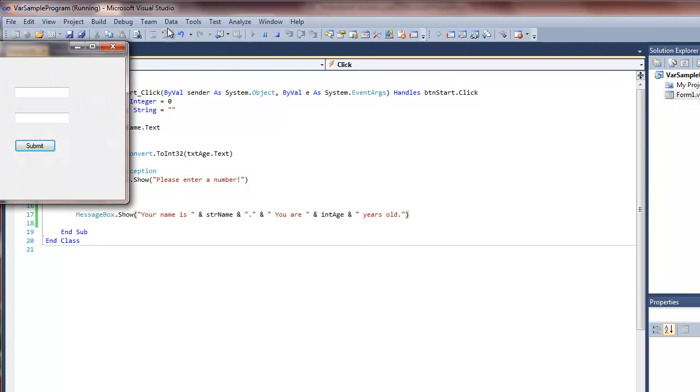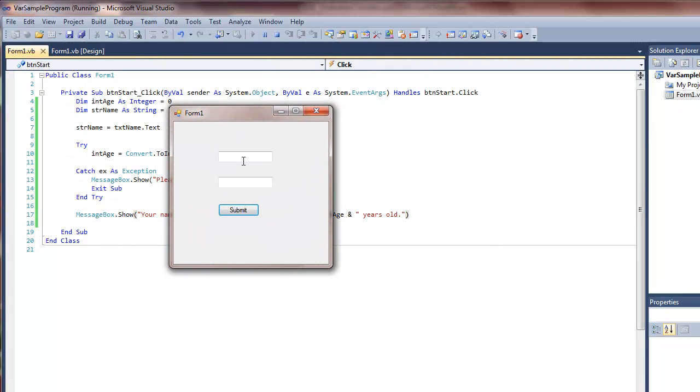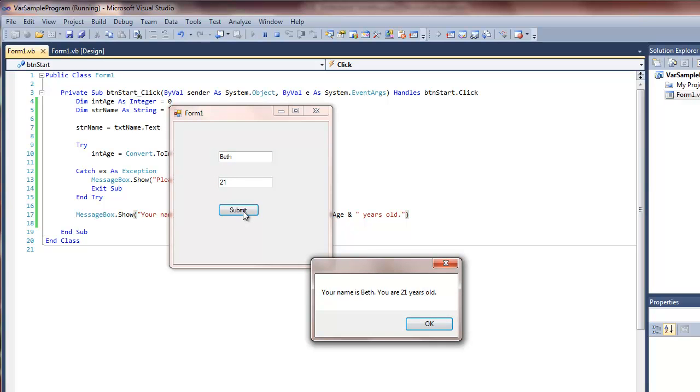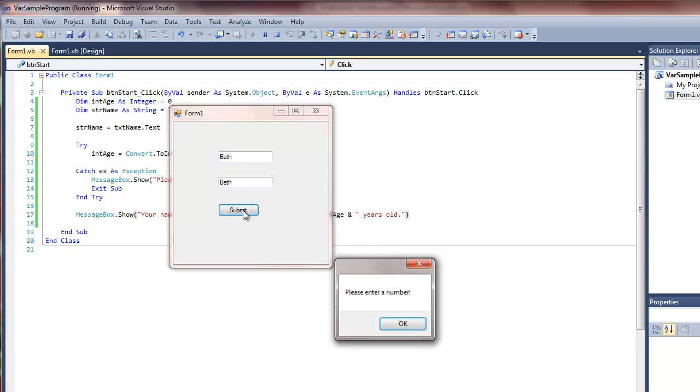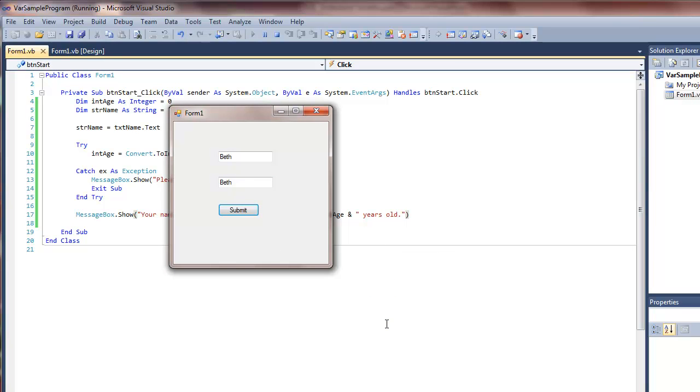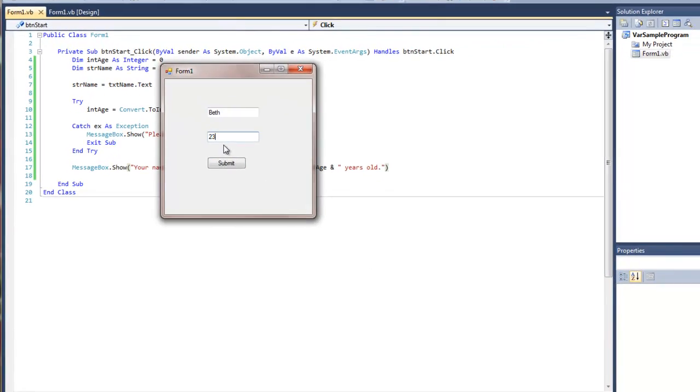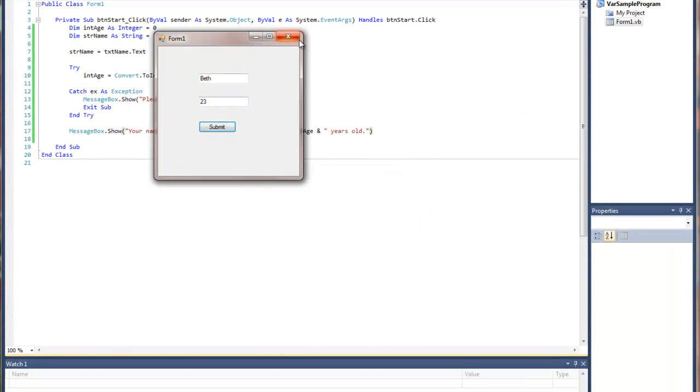Move this over here so we can see it. Now obviously this is a real program, we'd have labels on here to label our text boxes, but this is just a sample. So let's say Beth, and let's say Beth is 21. So as you see, your name is Beth, you are 21 years old, pops up in the message box. Now let's type Beth twice. Notice, we now get the error because we created the exception. And now the program, instead of displaying the second message box because of the exit sub, exits the block code and goes back and waits for us to fix our problem. Alright.